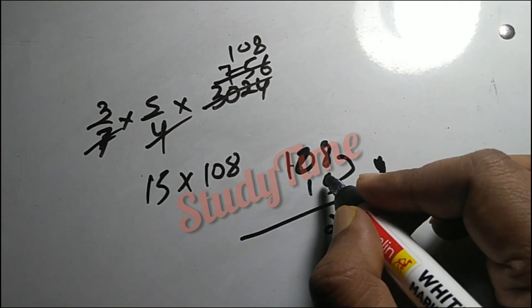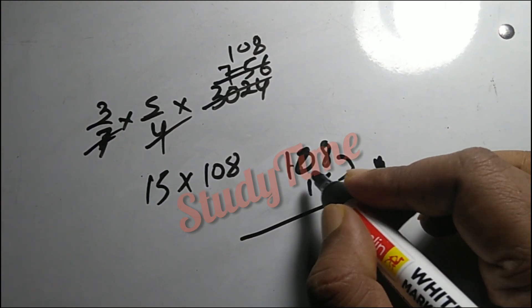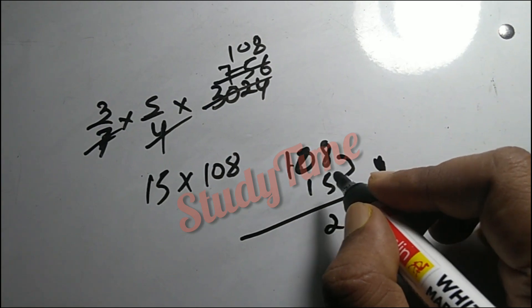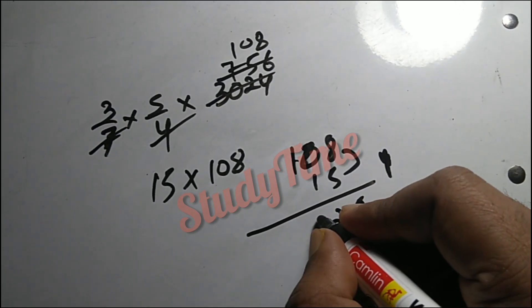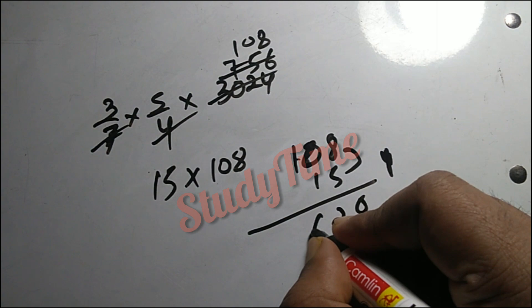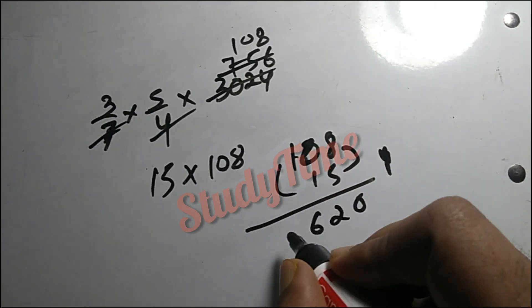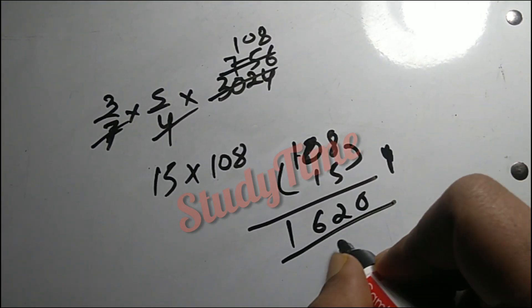15 times 108 gives us 1620. Yes, that's the answer: 1620.